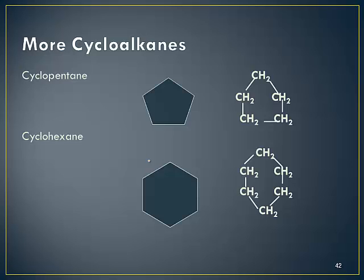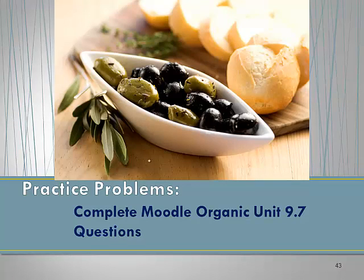Can you have a cycloethane? No — it's impossible to have a cyclic loop between two individual atoms. We can have very large cyclic molecules, but the smallest possible cyclic alkane is cyclopropane. At this point, you're prepared and ready to complete section 9.7 out of your self-directed notes.